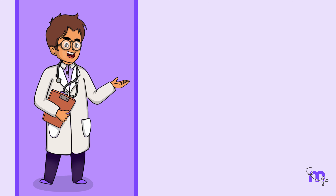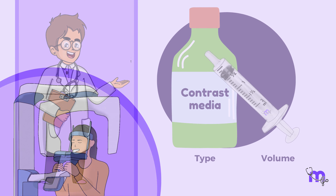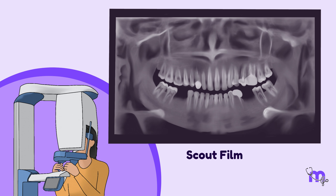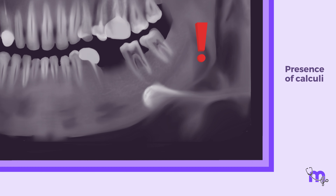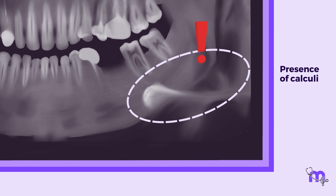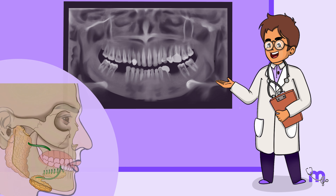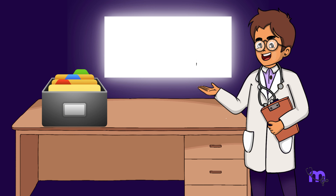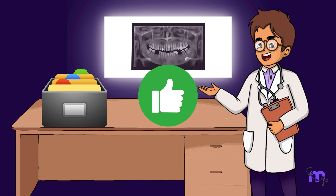This phase involves collecting detailed clinical data about the patient, including their name, age, chief complaint, relevant medical history, allergies, and prior radiographs if available. We also inquire about any previous use of contrast media and the type and volume used. An initial radiograph called a scout film is taken to confirm proper patient positioning. This film also helps check for the presence of calculi and overlap of normal structures such as the hyoid bone, which might obscure the gland being examined, ensuring the procedure provides the clearest possible images.